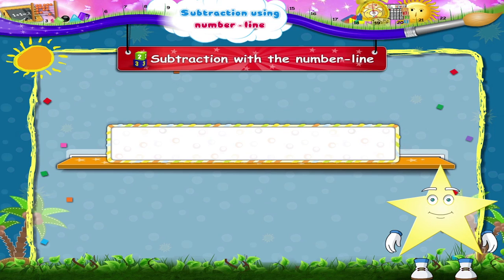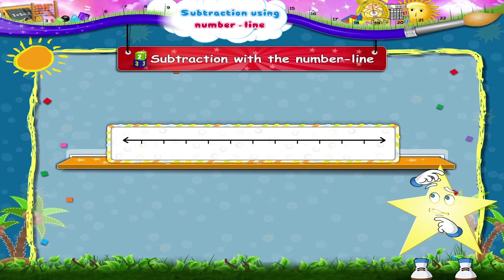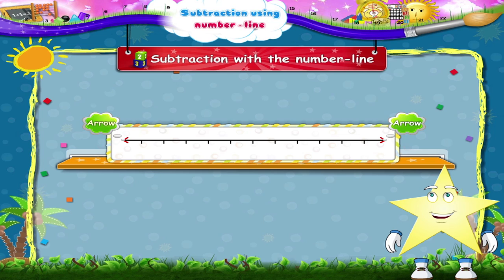You do remember how to draw the number line, Starry? Yes, two arrows on either side with numbers. Zero, one, two, three, four, five, six, seven, eight, nine and ten written at equal distances.